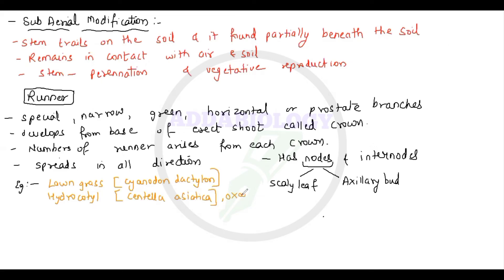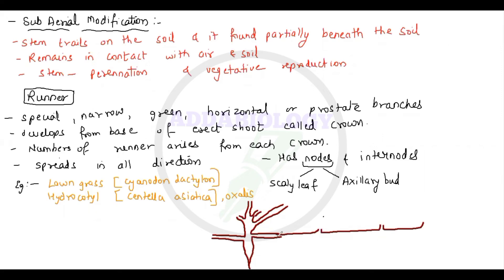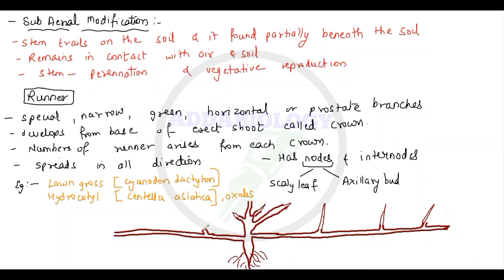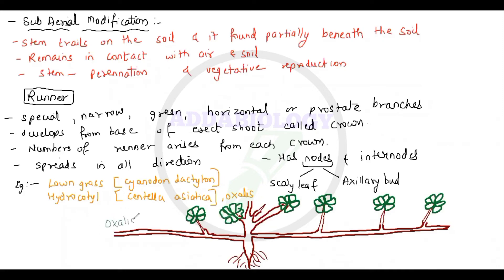Examples of runner include lawn grass — Cynodon dactylon — and Hydrocotyle, which is Centella asiatica, and also Oxalis. If we draw the diagram, the crown is the central point from which runners grow in different directions. When we talk about runners, they have a common point at the crown, but if they break from the crown, nothing will happen because they have their own roots and leaves and will grow into a new plant.